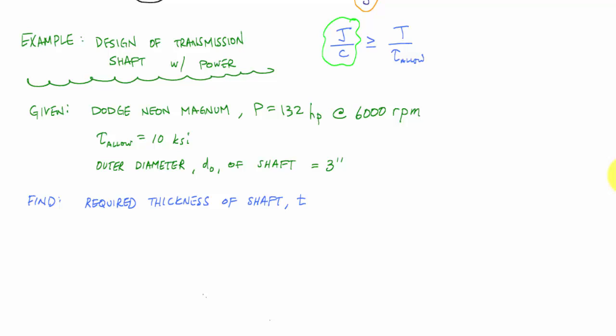That Dodge Neon will deliver about 132 horsepower at about 6,000 RPMs. And if I have a material with an allowable stress, let's say steel, with an allowable shear stress of 10 KSI, and already I know that I have an outer diameter of three inches and I'm designing a hollow circular shaft. Here, if this is the cross section of my shaft, this outer diameter is three inches. And what I want to do is I want to find the thickness of this shaft so that I can choose the appropriate one.